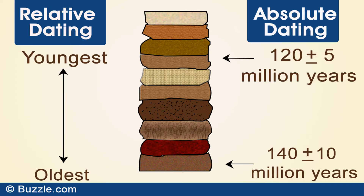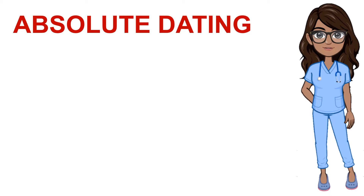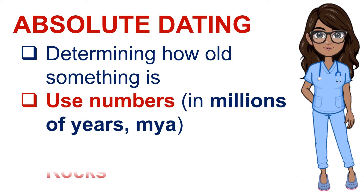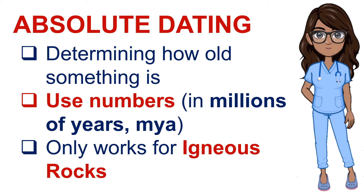It's time to study absolute dating and reveal the difference between these two types of dating techniques. Absolute dating is a method of measuring the absolute age of an event or object. In determining the absolute age of rocks and fossils, scientists analyze isotopes of radioactive elements. Absolute dating determines how old something is, uses numbers in millions of years (MYA), and it only works for igneous rocks.